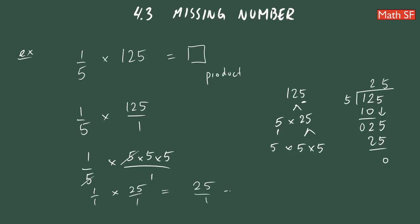One times twenty-five gives you twenty-five. One times one, one. And twenty-five over one can be just written as twenty-five.